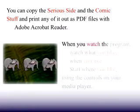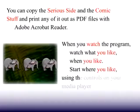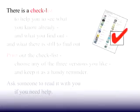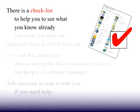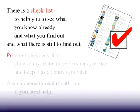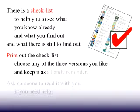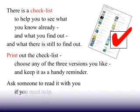When you watch the program, watch what you like, when you like. Start where you like, using the controls on your media player. There is a checklist to help you see what you know already, what you find out, and what there is still to find out. Print out the checklist, choose any of the free versions you like, and keep it as a handy reminder. Ask someone to read it with you if you need help.